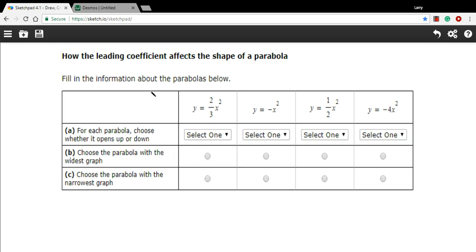I think we can answer these questions now. So the first one says, for each parabola, choose whether it opens up or down. I've got a positive here, so that opens up. I've got a negative here, so that opens down. Positive here, so it opens up. And negative here, so it opens down. Okay, that's not too hard.